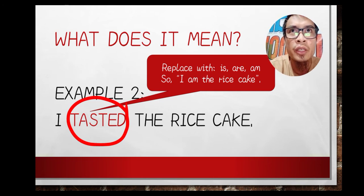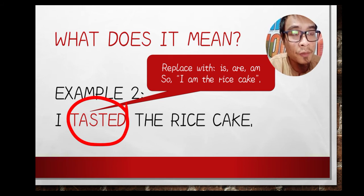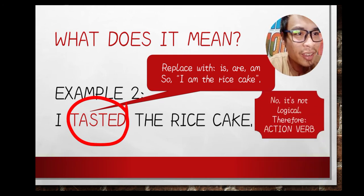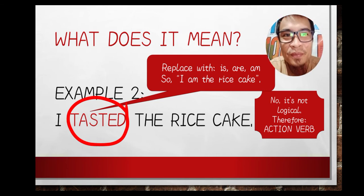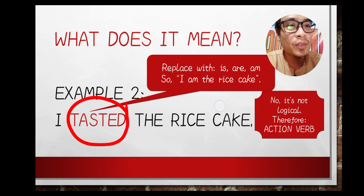In grammar, there is a field called semantics, which looks into the meaning of the sentence — whether it is meaningful and sound. Figuratively the sentence might pass, but in semantics, 'I am the rice cake' is not acceptable. It is not logical. Because it is not logical after the replacement, 'tasted' here is used as an action verb.